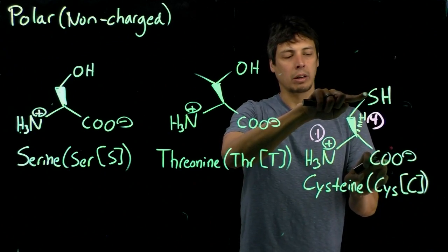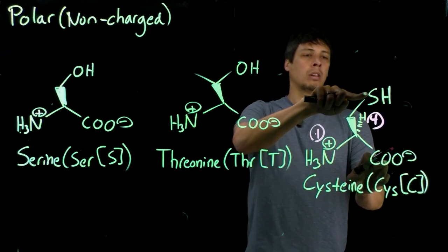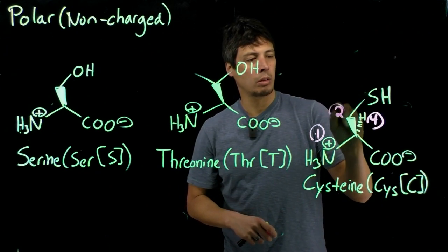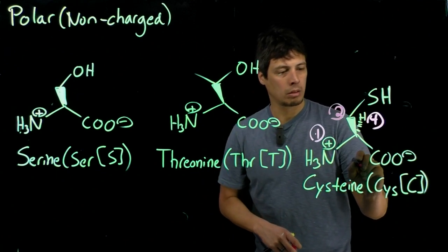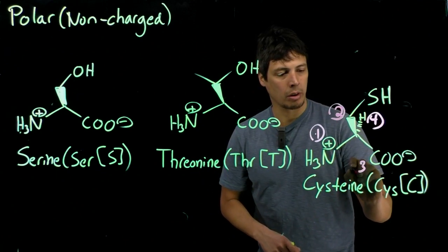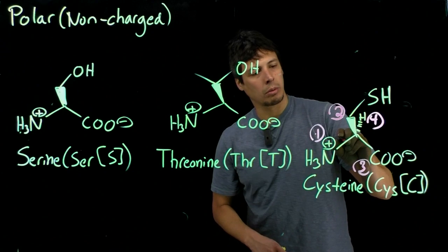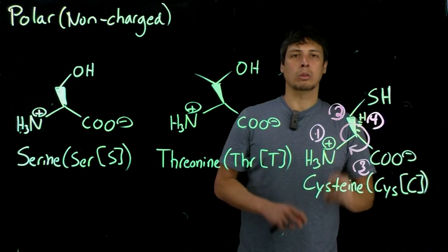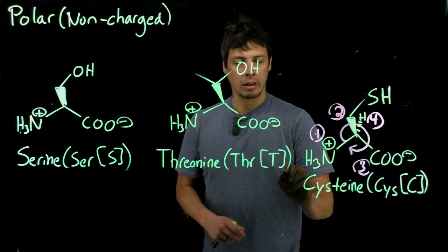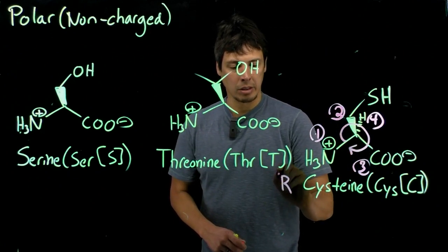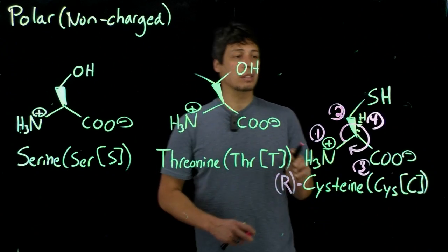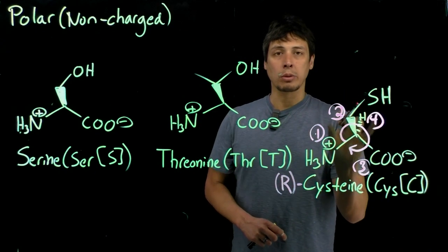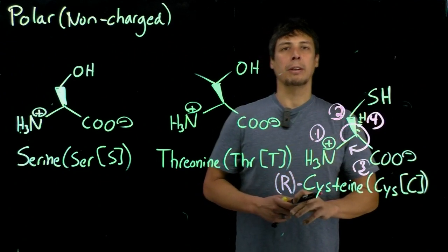And sulfur has a higher molecular weight than oxygen does, right? So that means that this gets the priority, two. And this one gets the lower priority, three. And so when we draw our circle from one to two to three, it now goes clockwise, so that the stereo configuration is R, instead of S. But again, notice that as you draw it, it is drawn completely the same way.